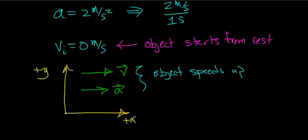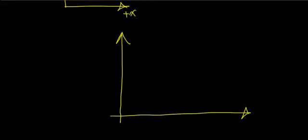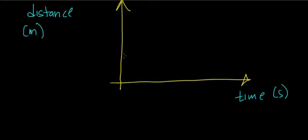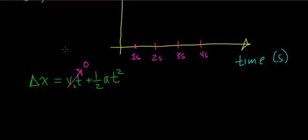To make the distance versus time graph given these initial conditions — starting from rest and accelerating at 2 meters per second squared — I'll plot distance in meters on one axis and time in seconds on the other. I want to find where this object is at each 1-second interval. To do that, I'll use the relationship: distance equals initial velocity times time plus one-half acceleration times time squared. Since the initial velocity is 0, this entire term disappears.